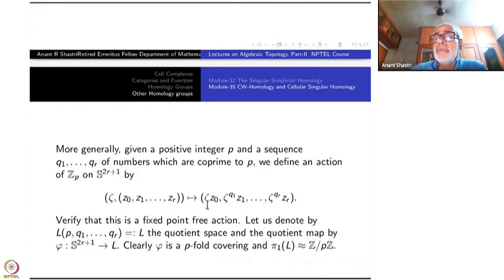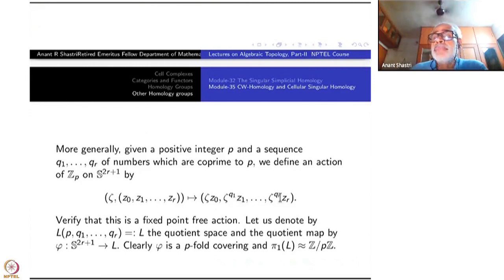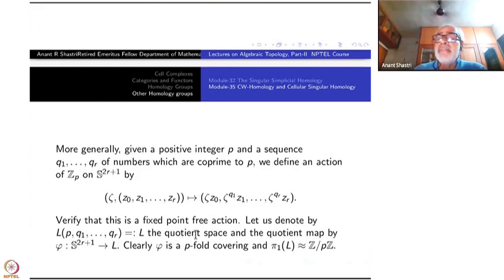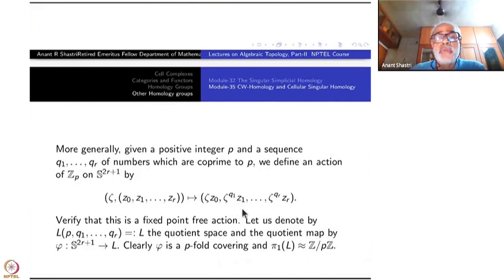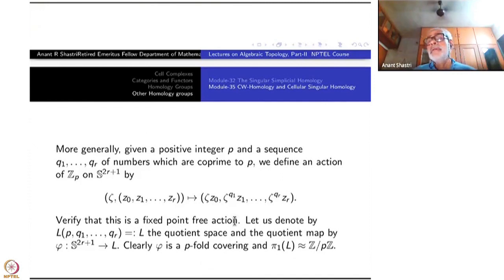Q₁ through Q_R are parameters for the twisted action. You could have taken all of them equal to 1, giving a diagonal action. So the P-fold covering tells you that the fundamental group of L is ℤ/Pℤ; the fundamental group has nothing to do with Q₁ through Q_R, except that they have to be co-prime to P so that the action is good — no fixed points. There are various interesting special cases.